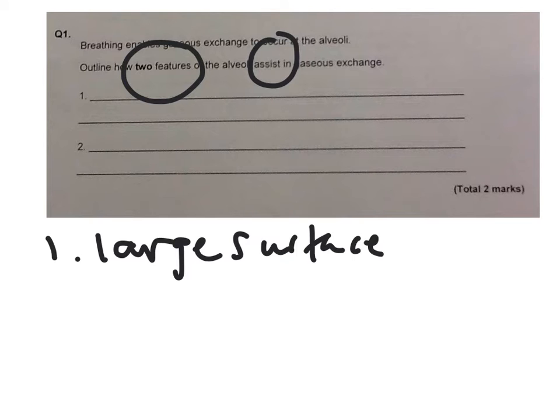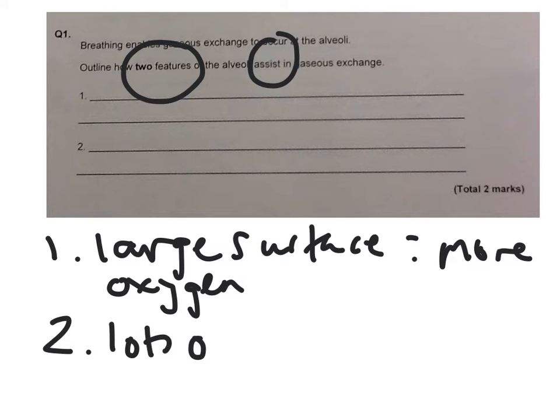Now obviously the larger the surface, then the more oxygen can be diffused into the body. So if we're looking at that as a sporting context, if you've got a lot of alveoli you've got a large surface area, more oxygen can get into your body which you can therefore use. Secondly, we've got lots of capillaries around the alveoli.